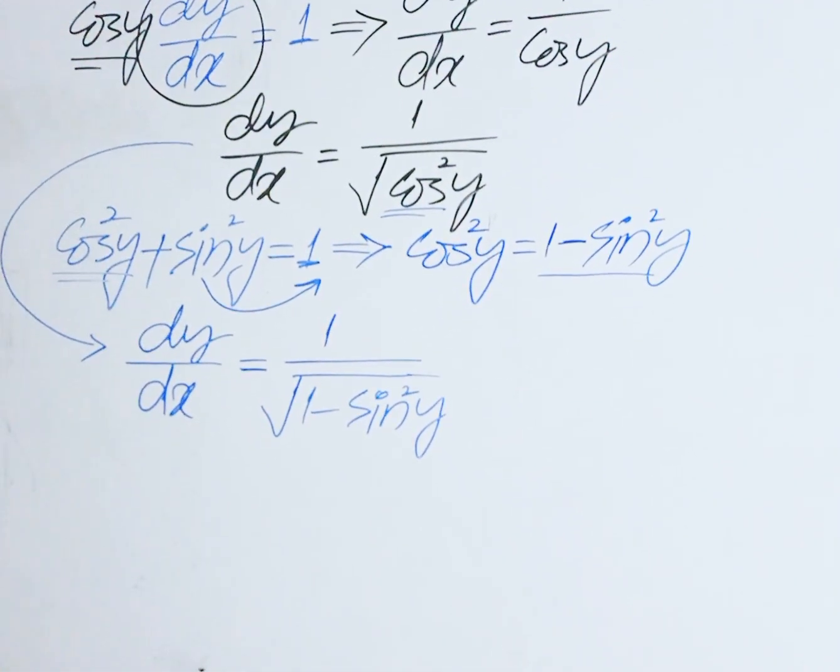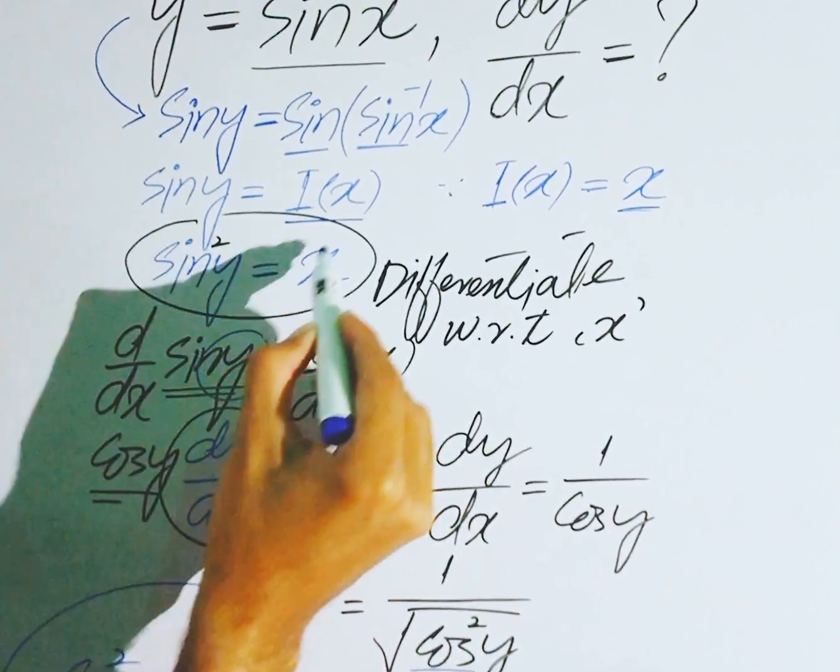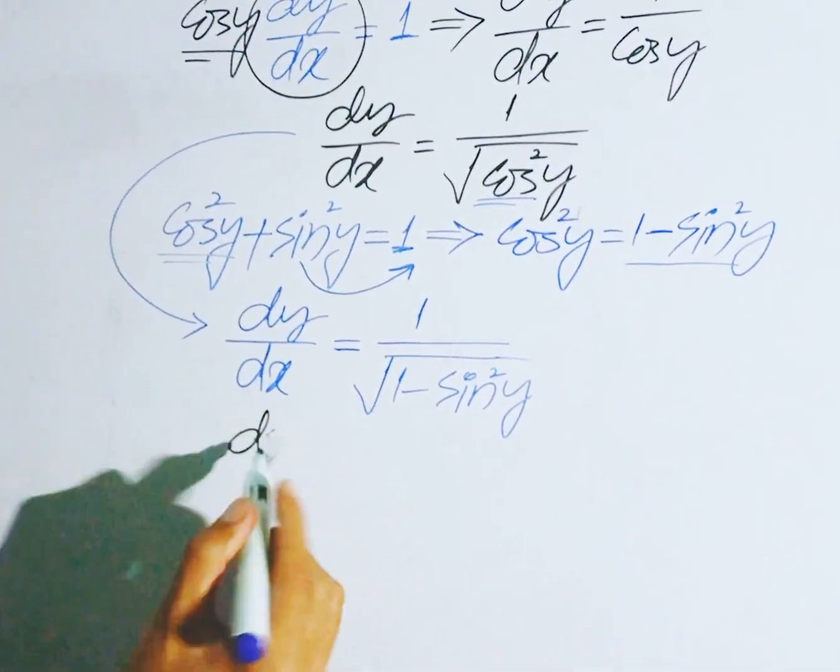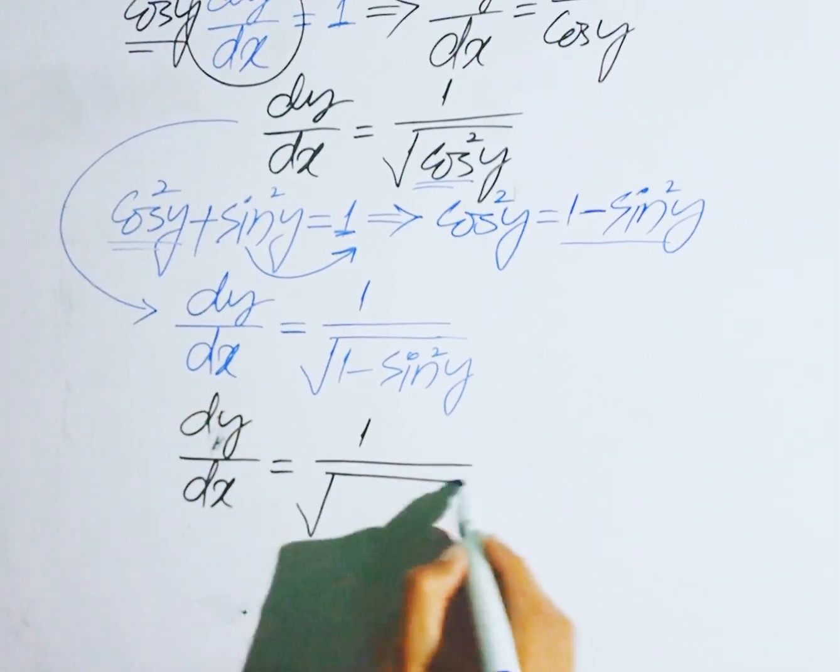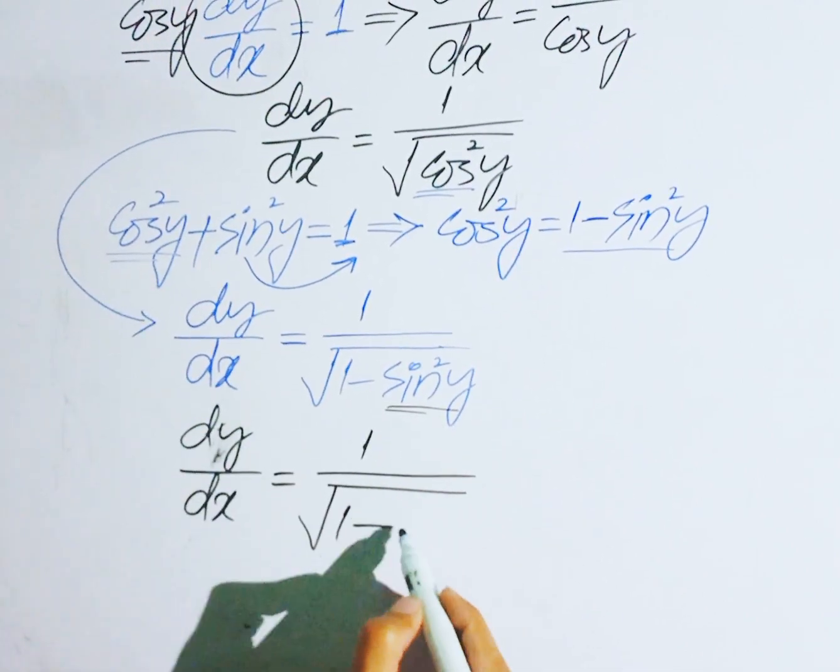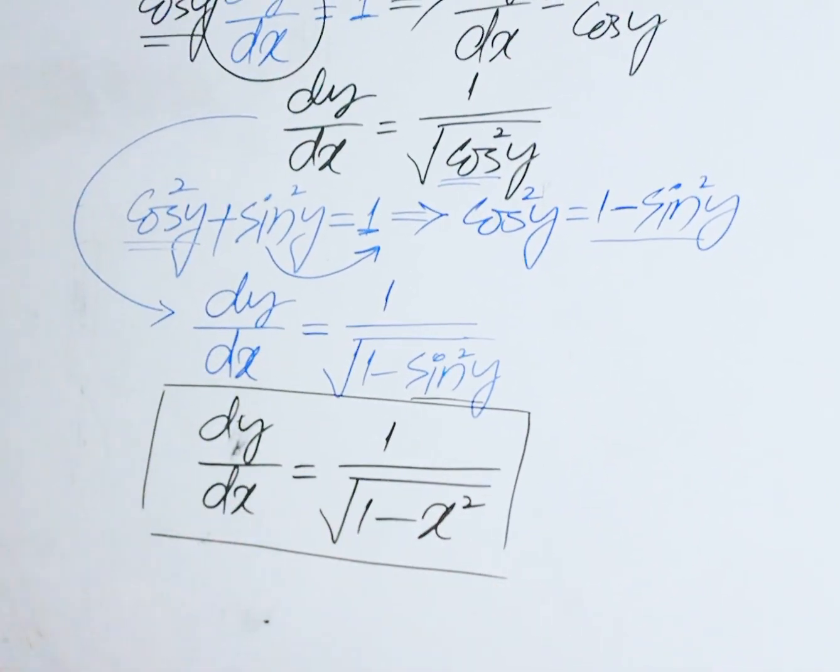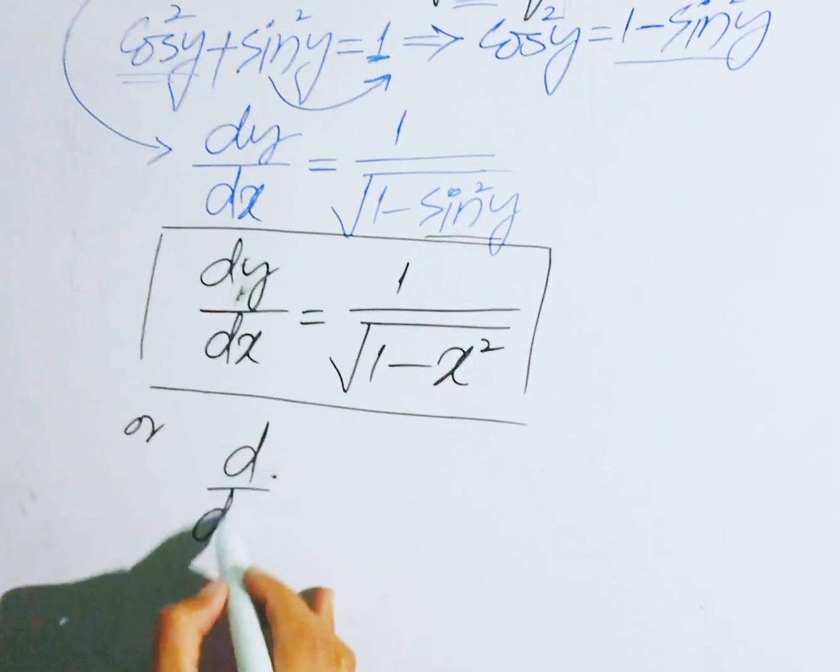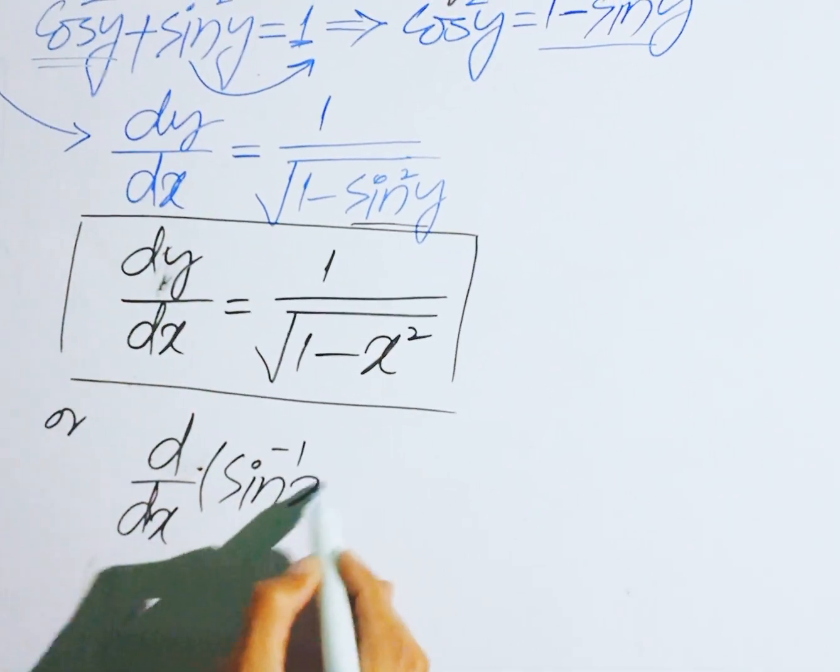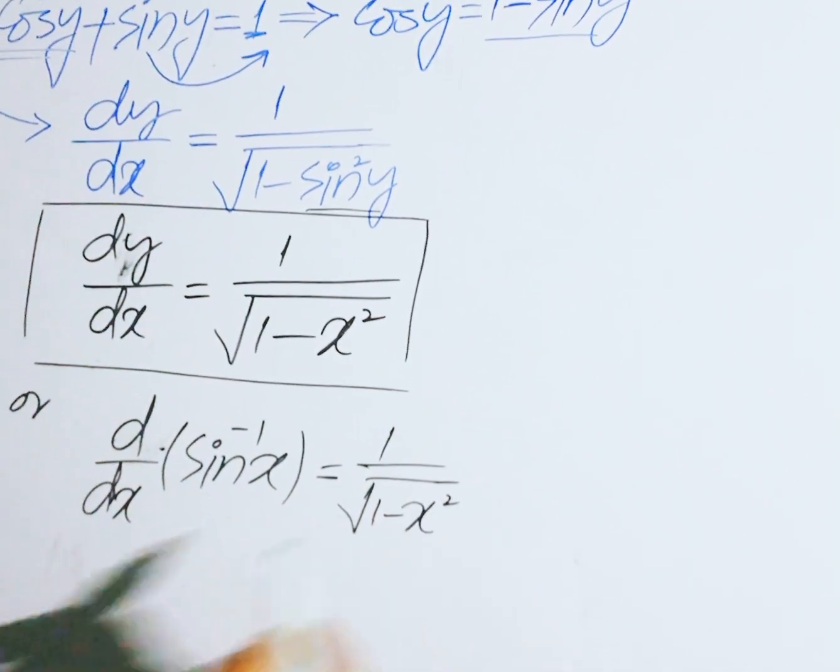At the beginning, we said that sine y is equal to x. If we take the square, then sin square y equals x square. So now you write dy over dx is equal to 1 divided by square root of 1 minus sin square y, which is x square. So the derivative of sin inverse is 1 divided by square root of 1 minus x square. Or you can say d over dx of sin inverse of x is equal to 1 divided by square root of 1 minus x square.